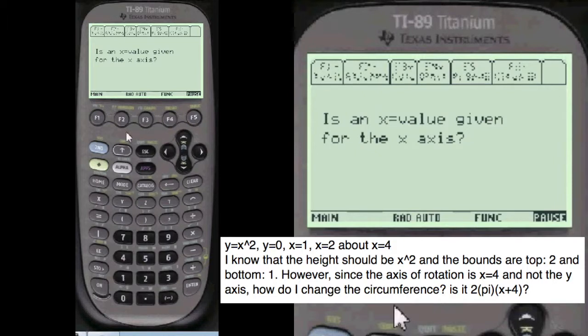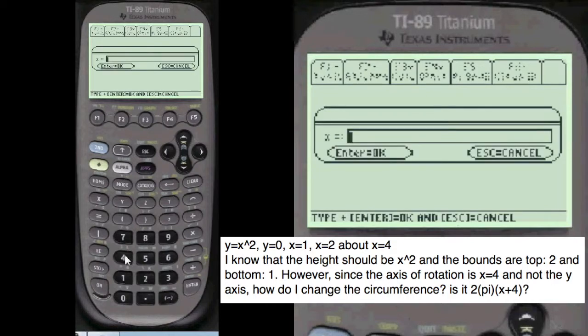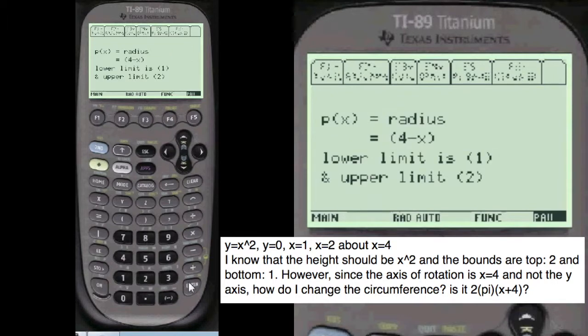Is an x value given for the x-axis? Yes, it is. Alpha 4. That x to the radius, 4 minus x.